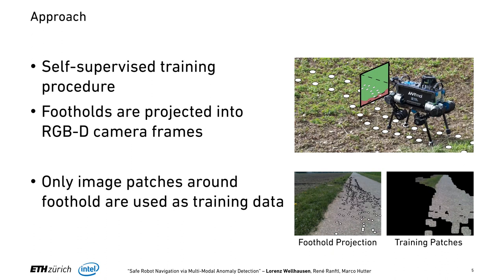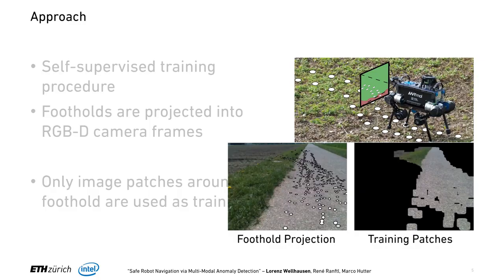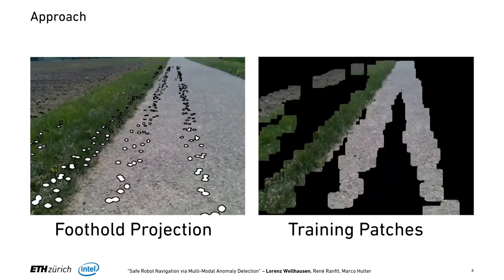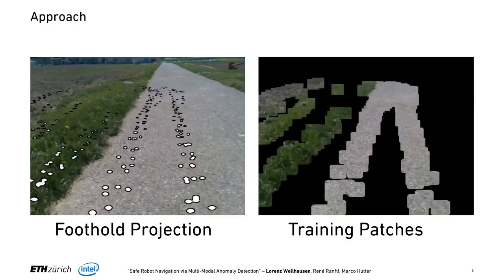We train this in a self-supervised fashion by gathering information from robot missions over various terrain. We get all the footholds of the robot and project those into the camera images that the robot has seen at various locations and timestamps. We then extract image patches around those foothold locations, and these patches are fed into the network at training time. On the left you can see the foothold projections and on the right all the image patches being fed into the training algorithm.